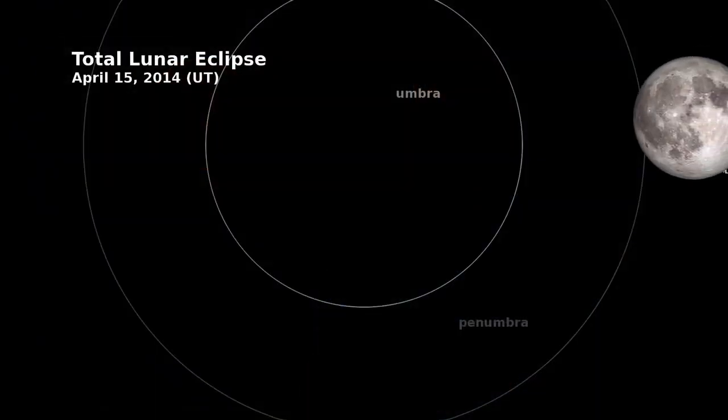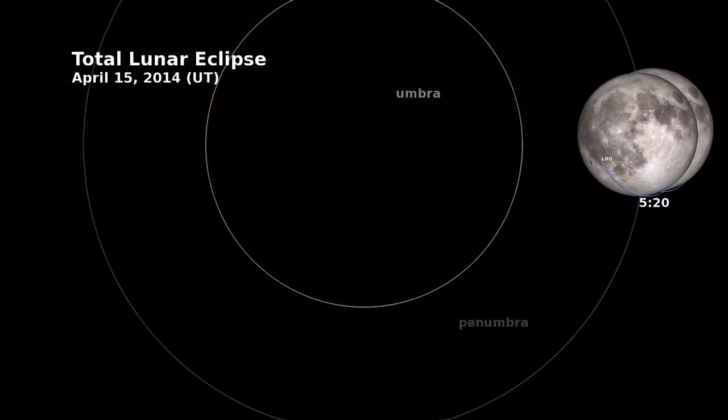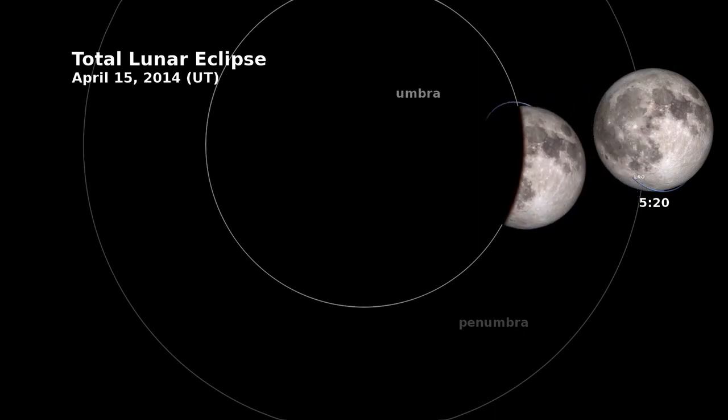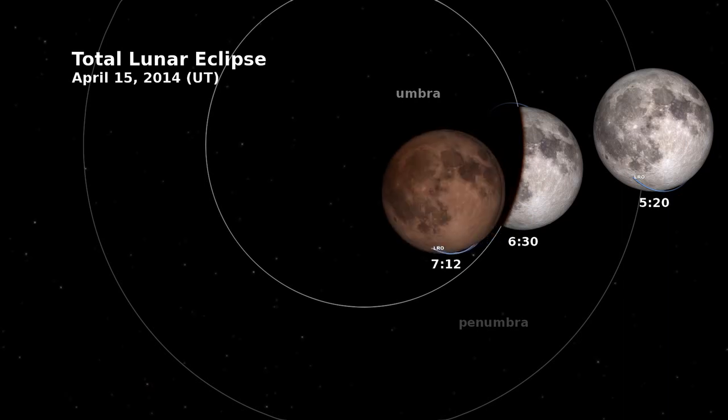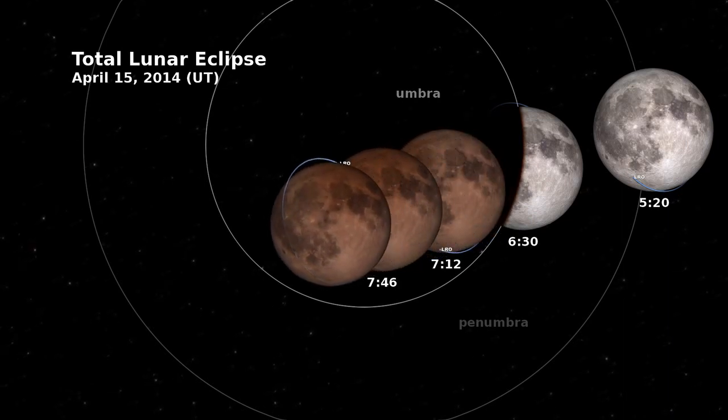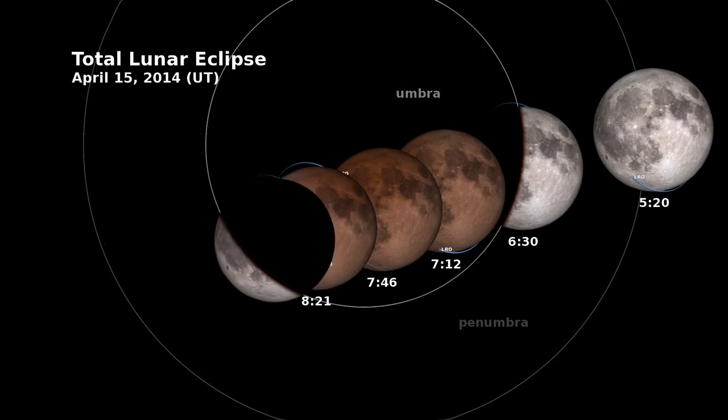What we see in this animation is a recreation of LRO orbiting the moon during the upcoming eclipse. When the moon passes into the Earth's umbra, or the Earth's shadow, that's when it is completely blocked from the sun, and we see the effect of Earth's sunsets being projected onto the lunar surface. That's why it turns a hue of red.